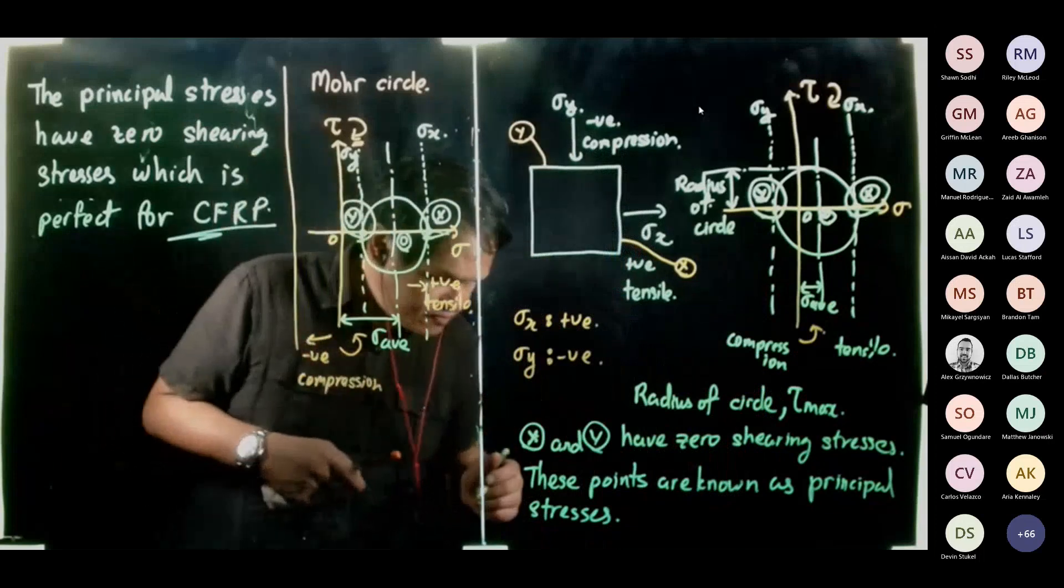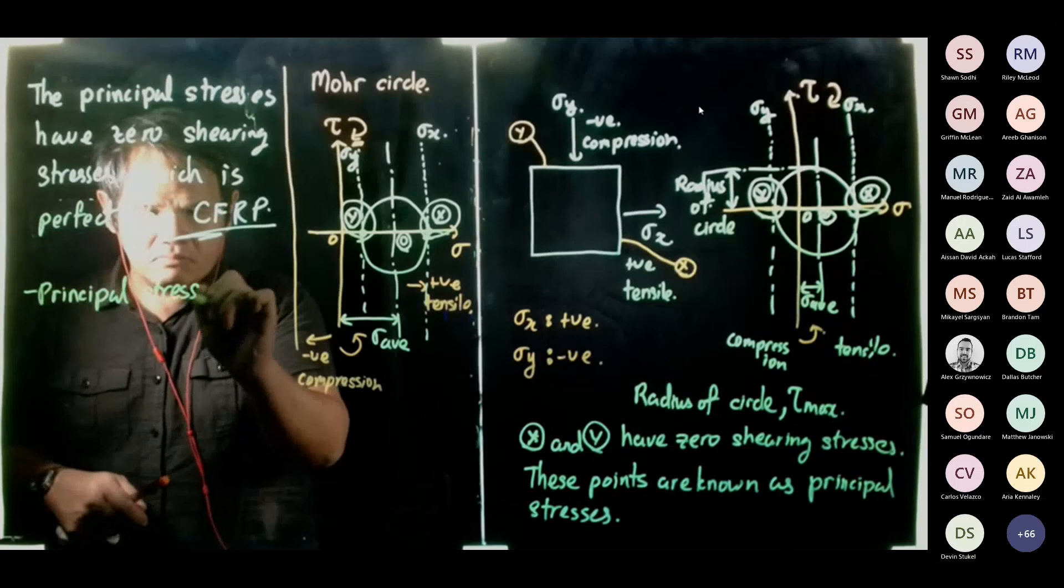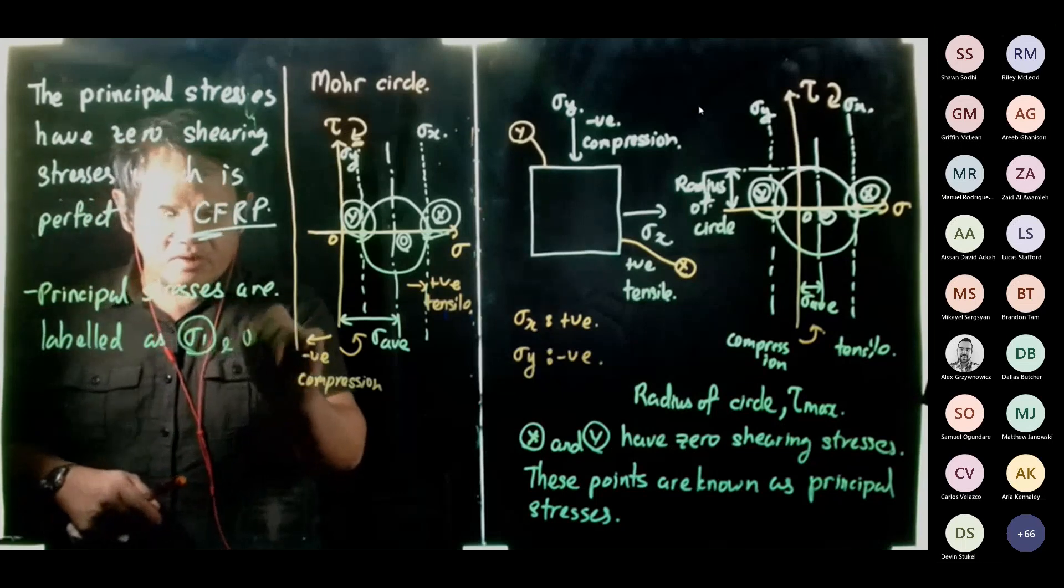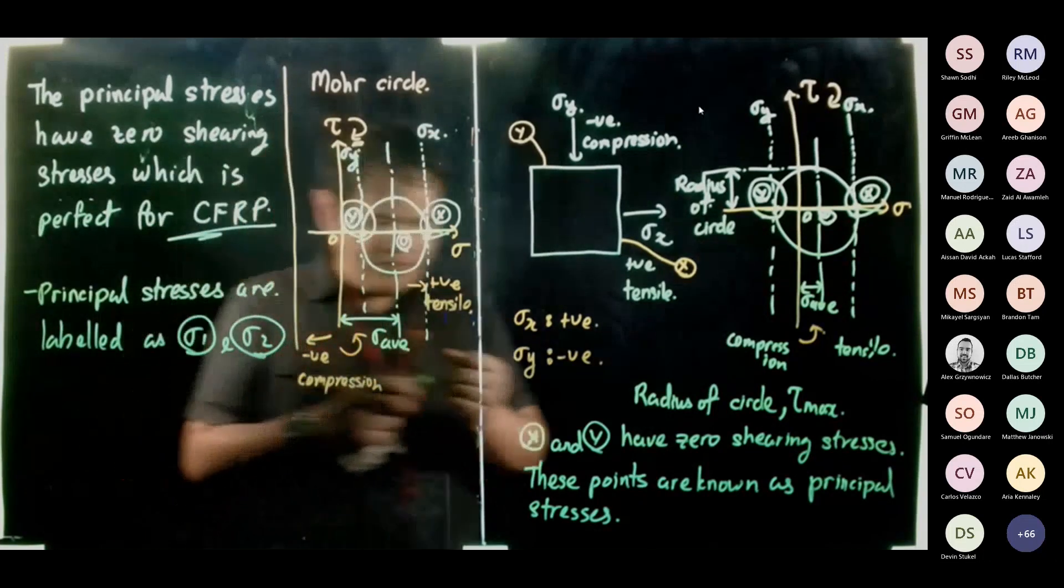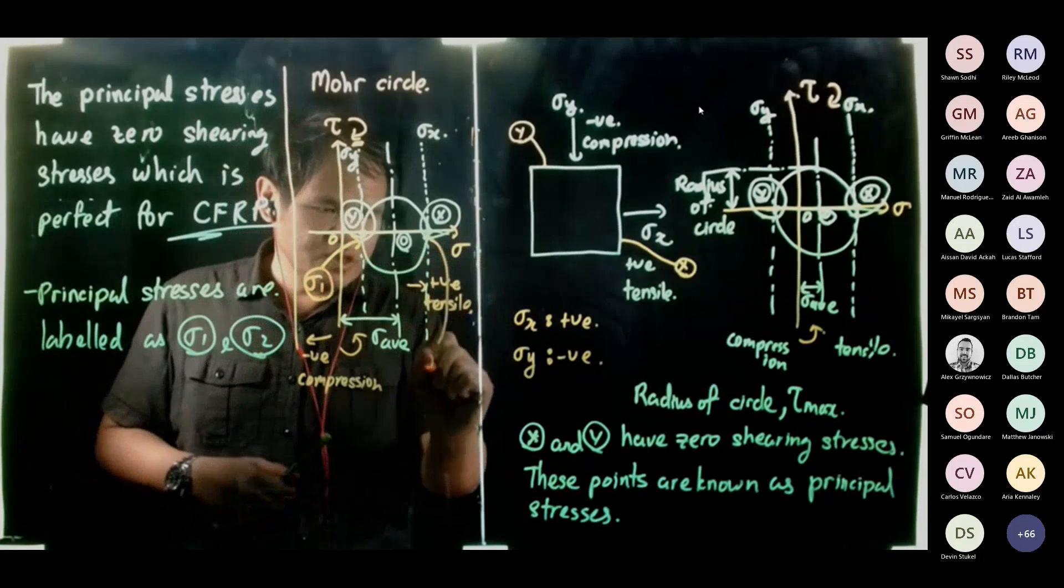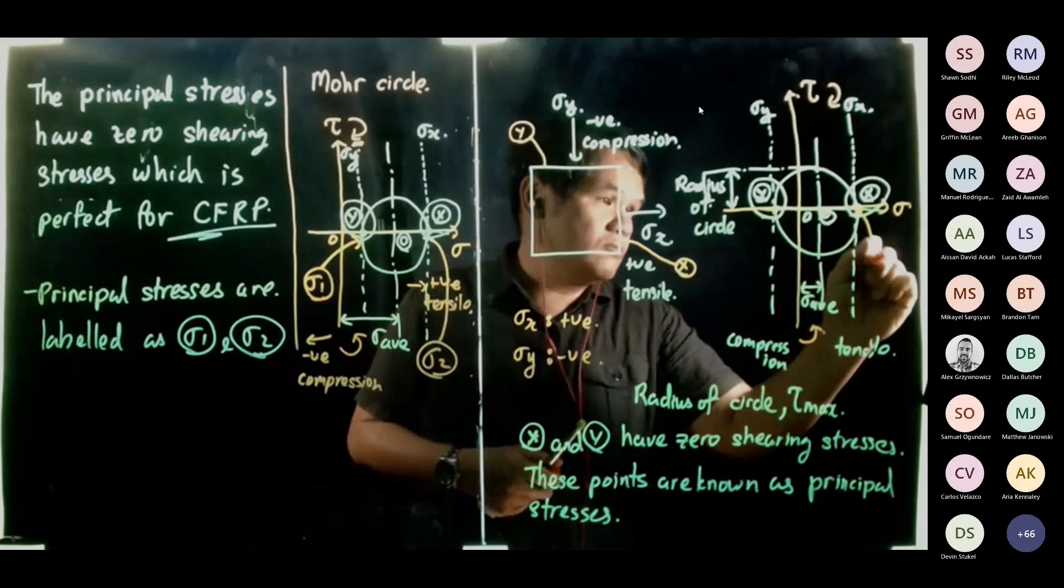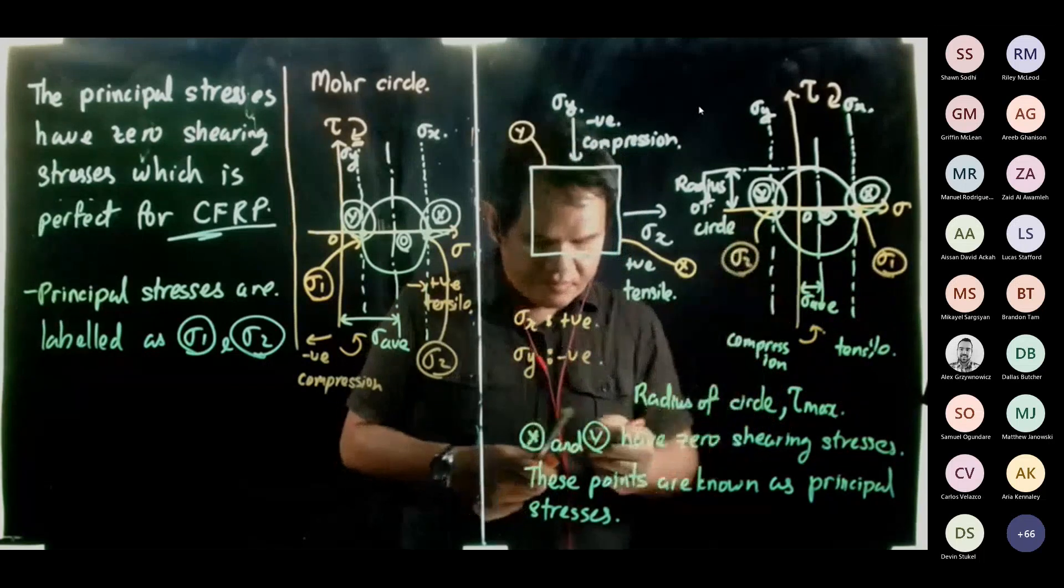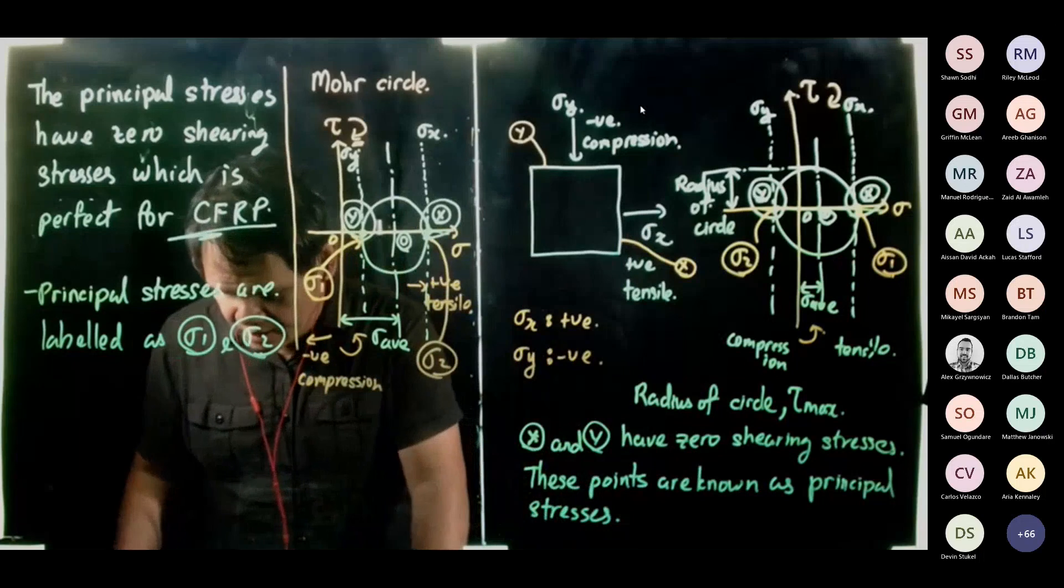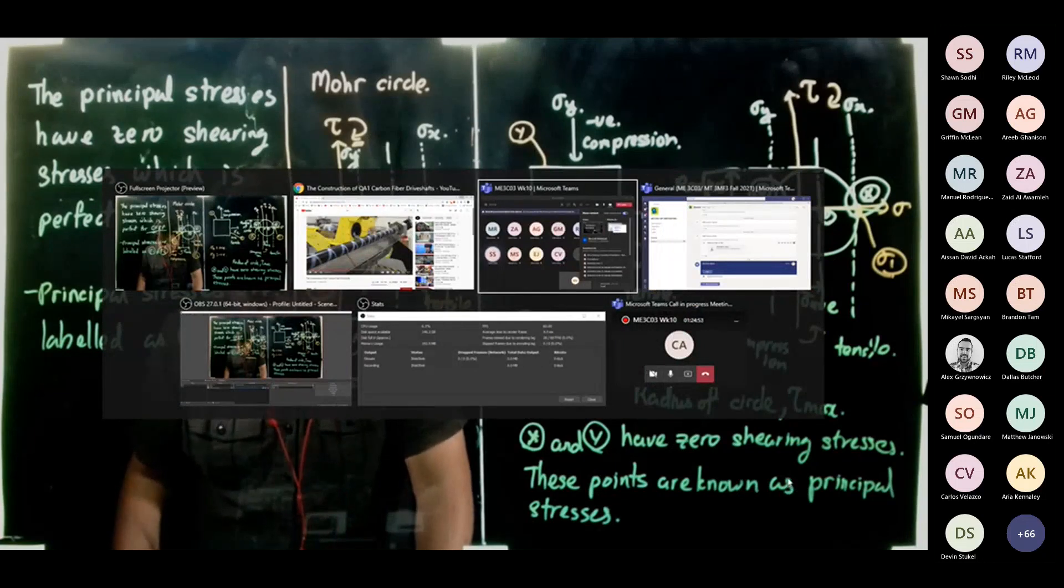Principal stresses are labeled as stress one and stress two. You normally see them. For this case over here, this is our stress one. Over here, this is our stress two. It can flip over also, does not matter. What I propose is we go for break for 15 minutes break and when we come back, I will reboot my network. When we come back at 15, we continue with shearing stress.